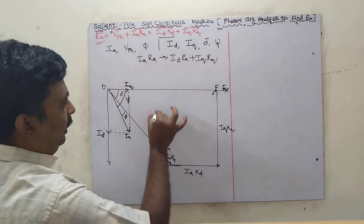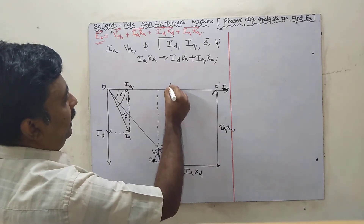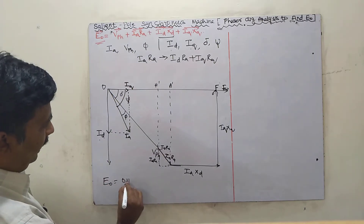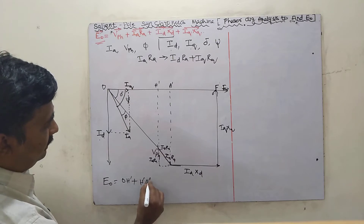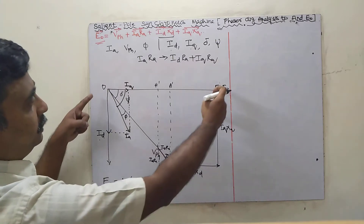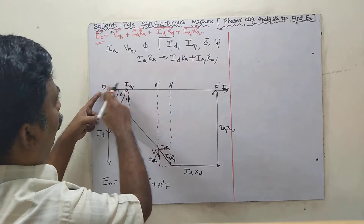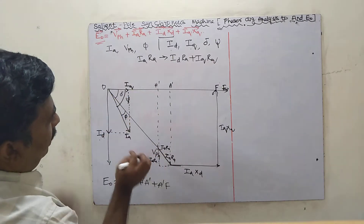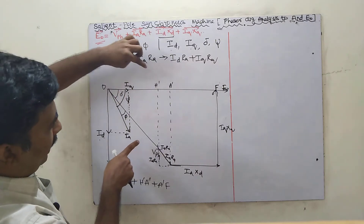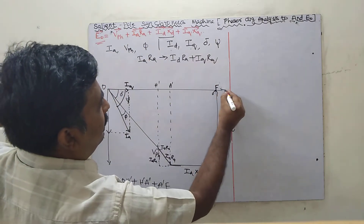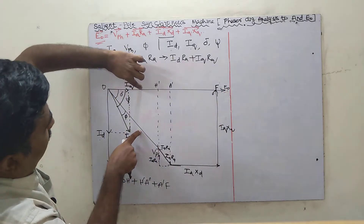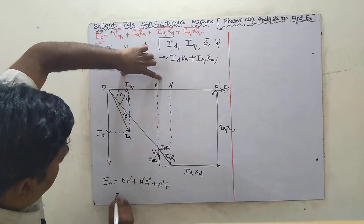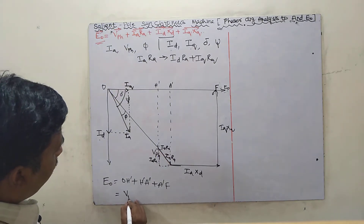I am putting a dotted line to help find E naught. E naught equals OH dash plus H dash A dash plus A dash F. Adding all those things gives E naught. For the V phase triangle, the angle between V phase and E naught is called delta. So OH equals V phase into cos delta, because cos delta equals adjacent side divided by hypotenuse.